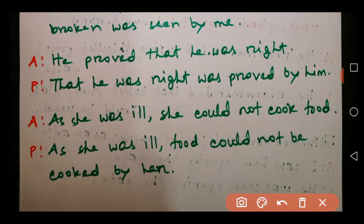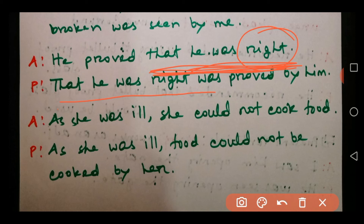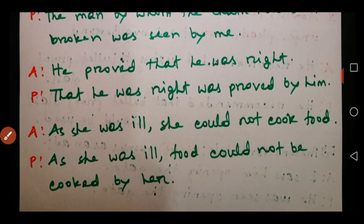Next: 'He proved that he was right.' In this type of sentence, 'right' is a subject complement — there is no object. When there is no object, we cannot make the dependent clause passive. So we take the whole part 'that he was right' as the object of the verb and place it in the subject position: 'That he was right was proved by him.'